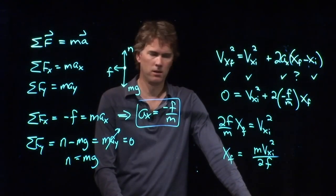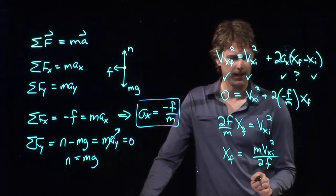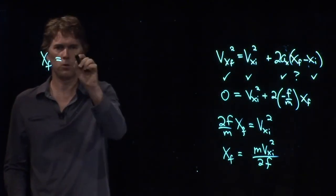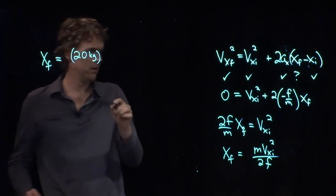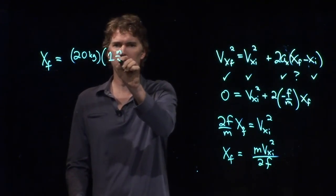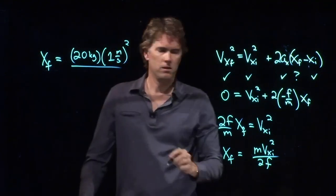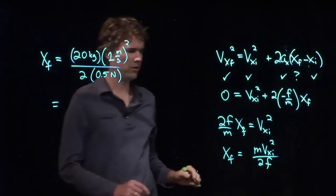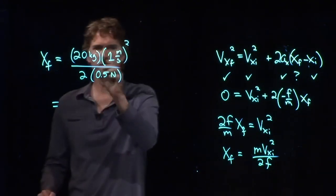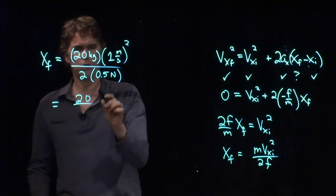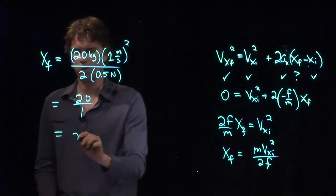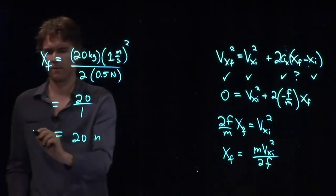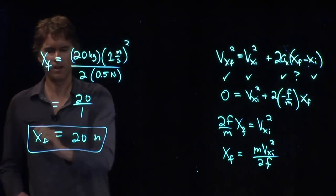And now we can check the numbers with the ones that I gave you. So somebody pull out a calculator and let's try some numbers. All right, I think we had 20 kilograms for m. Our Vxi was one meter per second. We had a two and then we had 0.5 newtons for our frictional force. So you don't really need a calculator for that, right? 1 squared is 1, 20 over 1 is 20. And what is our units? Meters. So how far is that thing going to slide? 20 meters.